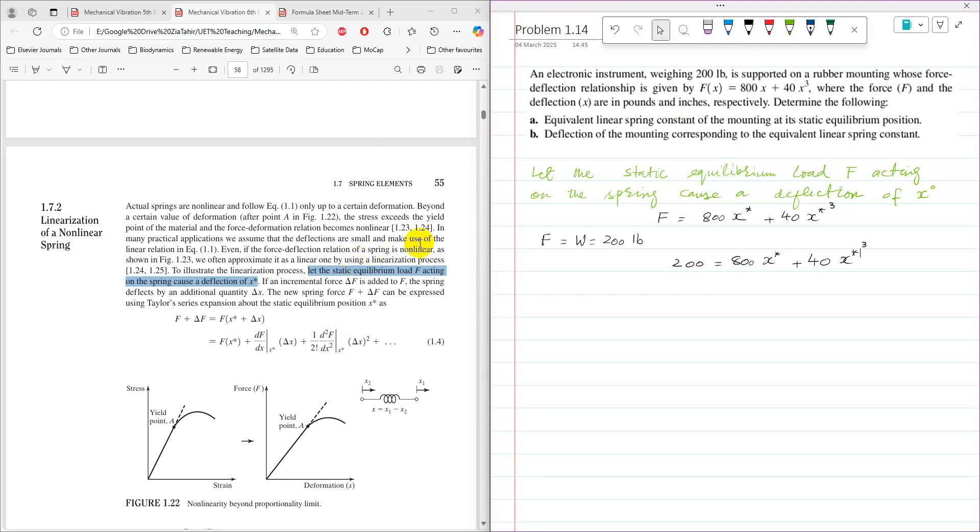If you are looking for problem 1.14 from the 6th edition, just repeat the same procedure and the final answer from 6th edition I will put at the end of this tutorial. Now you got that one and this equation is a cubic equation: 40x*³ + 800x* - 200 = 0. That is a cubic equation which is ax³ + bx² + cx + d = 0 and you have to solve this equation.